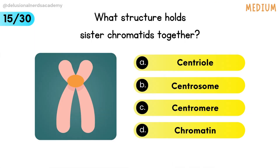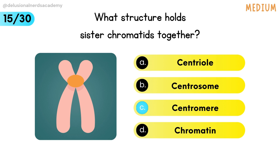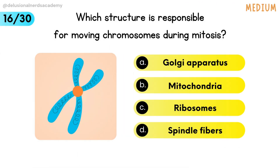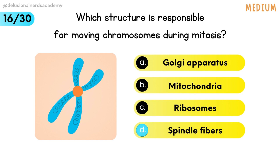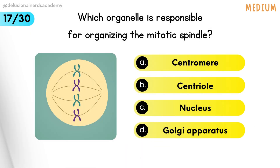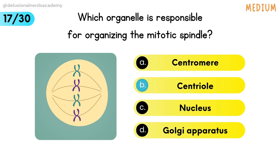What structure holds sister chromatids together? Centromere is the answer. Which structure is responsible for moving chromosomes during mitosis? Spindle fibers is the correct option. Which organelle is responsible for organizing the mitotic spindle? Centriole is the answer.